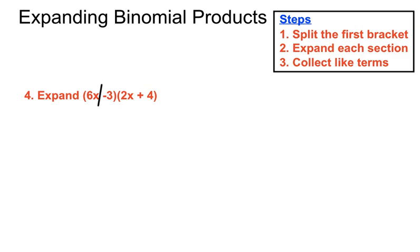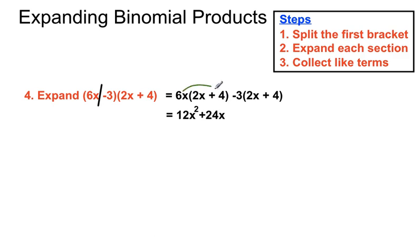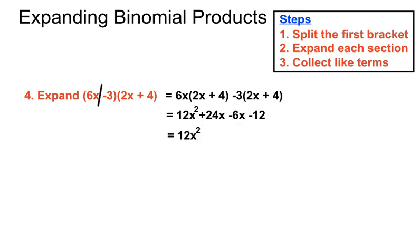Here's another one. We'll split the first term into 6x multiplied by the second bracket and minus 3 multiplied by the second bracket, then expand each section. 6x times 2x: 6 times 2 is 12, x times x is x squared, giving 12x squared. Then 6x multiplied by 4 gives 24x. Then minus 3 times 2x gives minus 6x. And minus 3 times plus 4: a minus times a plus makes a minus answer, so that's minus 12. The like terms are plus 24x and minus 6x, which simplify to give a final answer of 12x squared plus 18x minus 12.